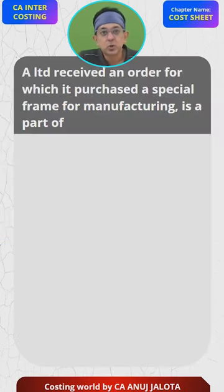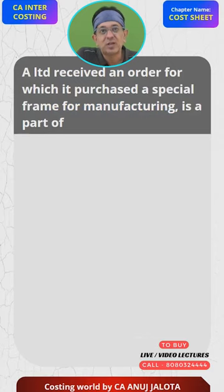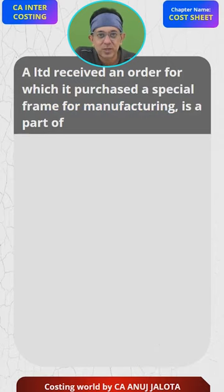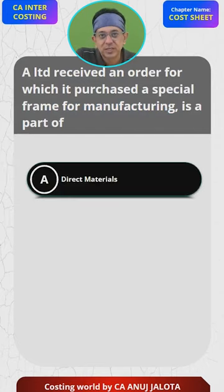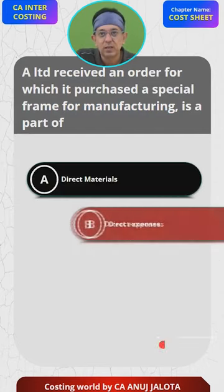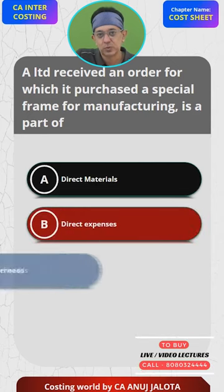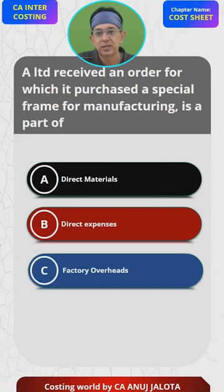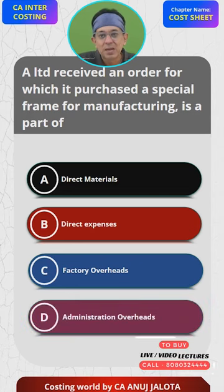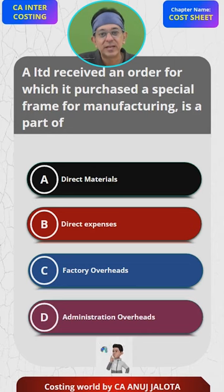Let's do them. The question is as follows: A Limited received an order for which it purchased a special frame for manufacturing. It is a part of which cost? A: direct material, B: direct expenses, C: factory overheads, D: administration overheads. Think of the right answer.